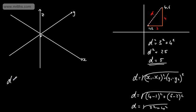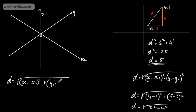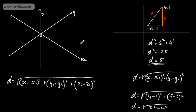In 3D, we say that the distance between two points is going to be the square root of (x1 minus x2) squared, plus (y1 minus y2) squared, plus (z1 minus z2) squared. That's going to give us the distance.